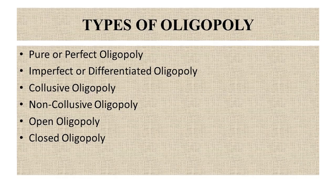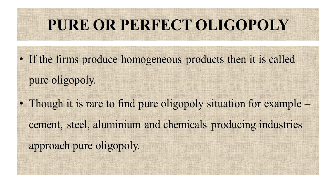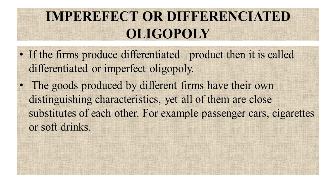Now we will discuss the types of oligopoly. The first is pure or perfect oligopoly. If firms produce homogeneous products, it is called pure oligopoly, though it is rare to find in practice. For example, cement, steel, aluminum, and chemical-producing industries often approach pure oligopoly. The next type is imperfect or differentiated oligopoly: if firms produce differentiated products, it is called differentiated or imperfect oligopoly.